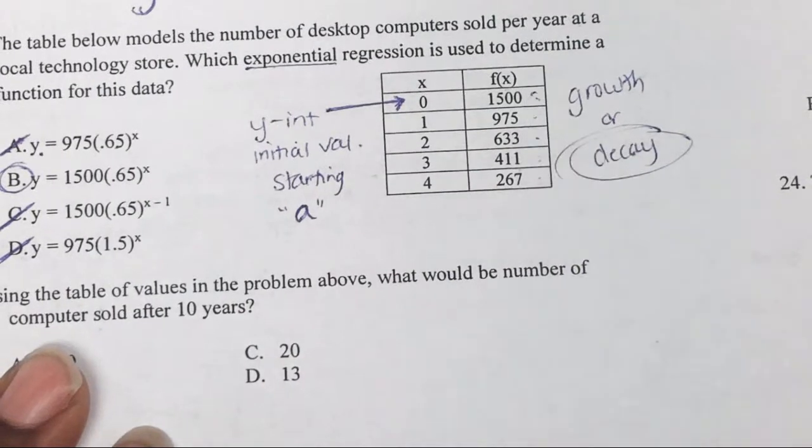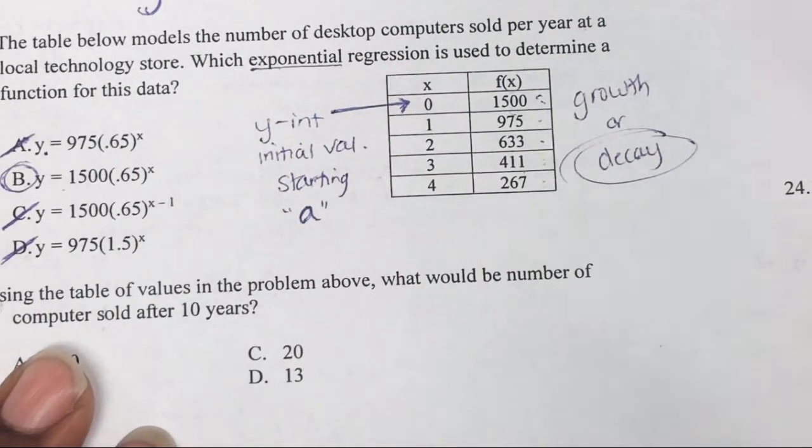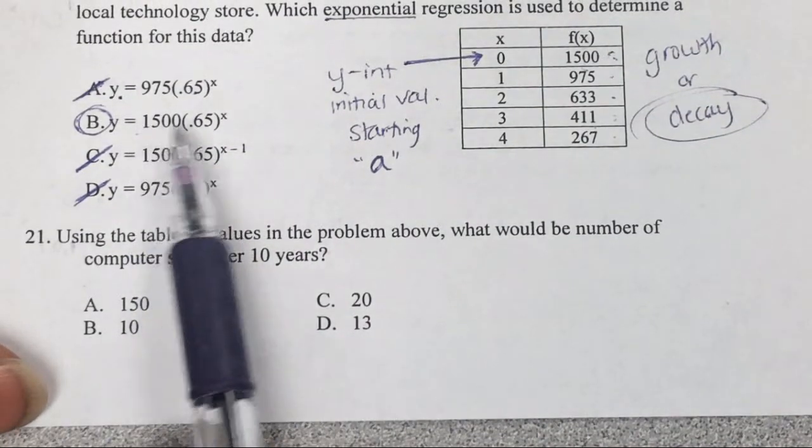I didn't think about that, but you could have just put this in the y equals and see if your table matched, or this in the y equals see if your table matches. That probably would have been easier for some people.